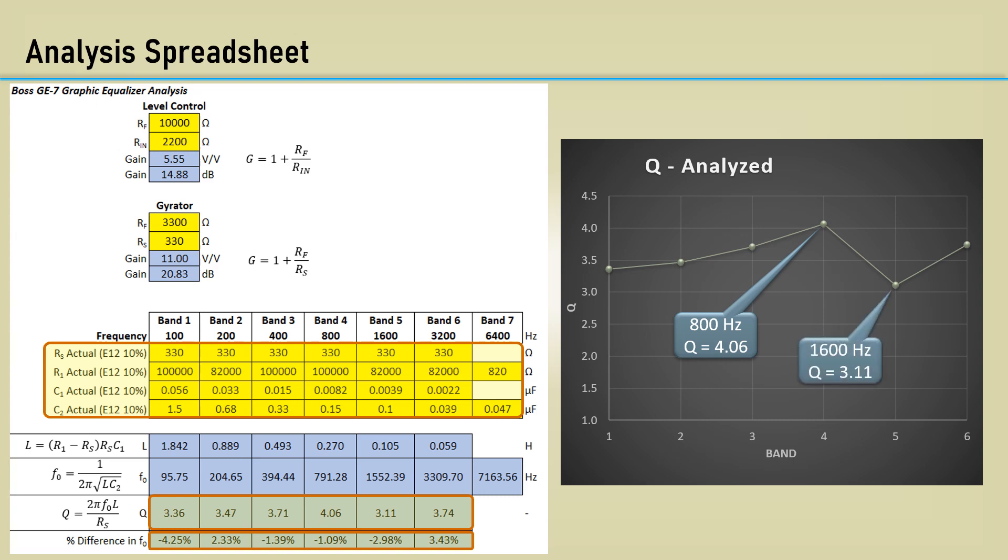It seems prudent to test the Q to see how it correlates with the calculations. The problem is the bands interact with their adjacent bands, and the Q of each gyrator cannot be measured when connected to the others. The resultant Q will be lower due to the interaction. However, the measured aberrations should somewhat correlate with the calculated values.